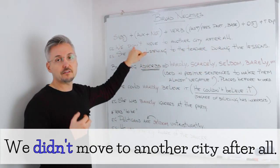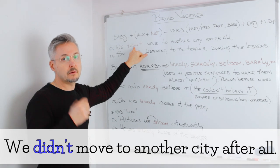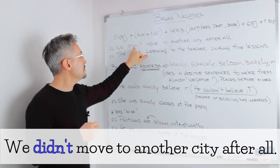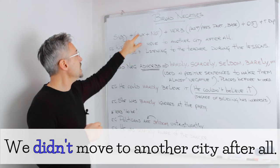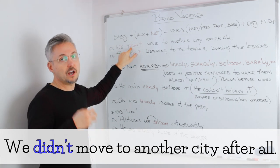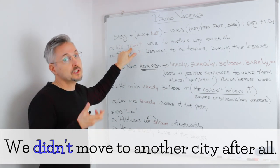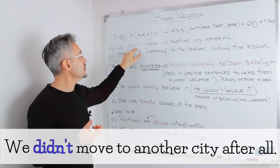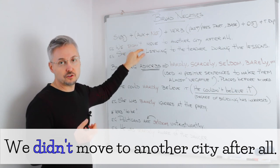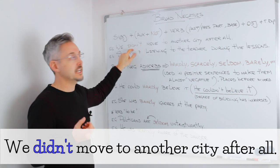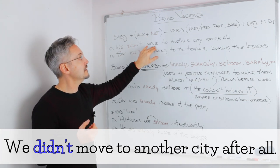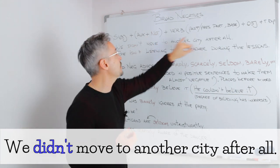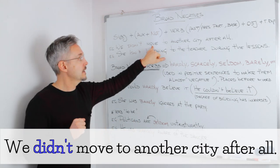In this case, we have the past simple tense. So we need the auxiliary of the past simple, which is 'did'. Then we have 'not', so the contraction 'didn't'. And then the base of the verb — 'to move', 'move'.